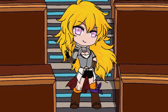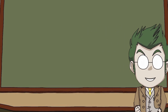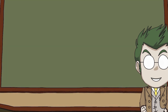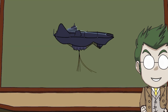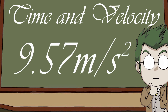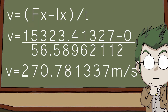9.57 meters per second squared — that's only 0.24 meters per second squared slower than before you added air. It may sound like a small difference, but when we're using really big numbers it makes a huge difference. If we had applied it to something like Yang's glass dropping scene, a small drop from a small object, there really would be a very tiny difference. But Atlas is no small object. Now we have to kind of repeat ourselves — we need to get time and velocity with the new acceleration. Fall time equals 56.58962112 seconds and velocity equals 270.781337 meters per second.